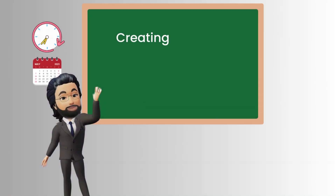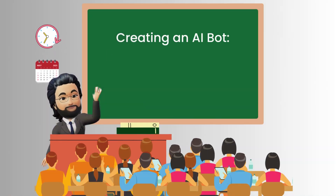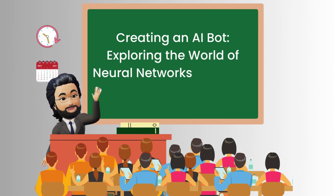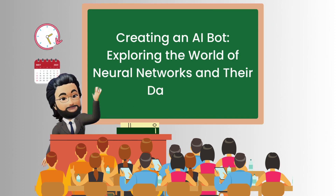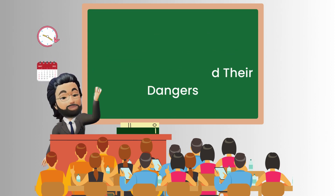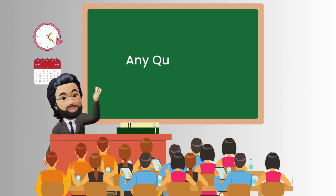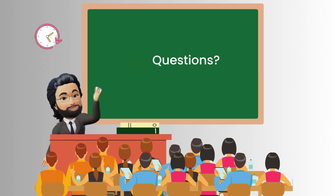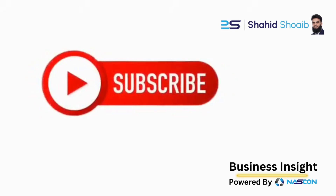And that's a brief overview of how neural networks work, how AI bots like ChatGPT are created, and the potential dangers they pose. Any questions? Please mention your questions in the comment box. Thank you.